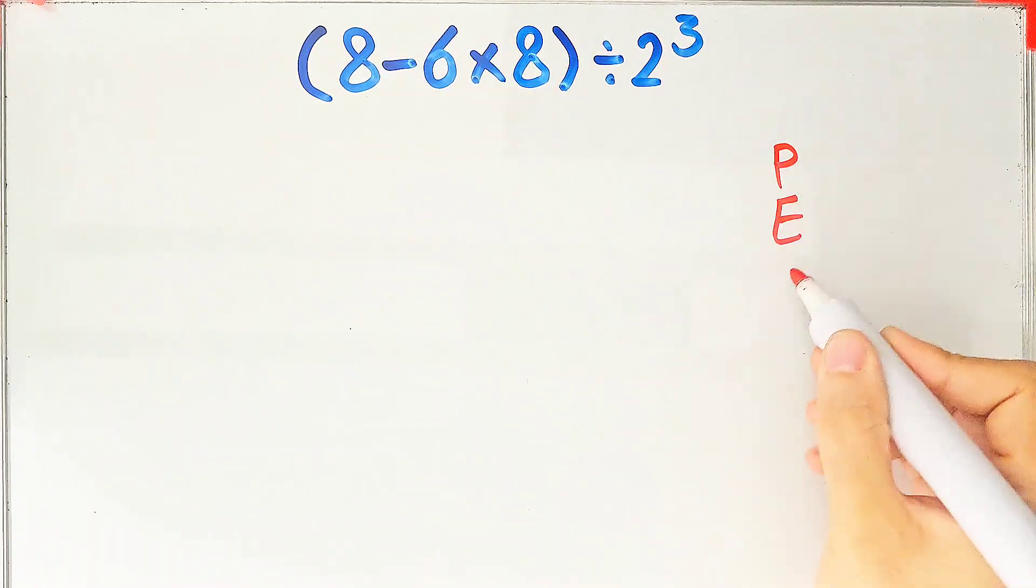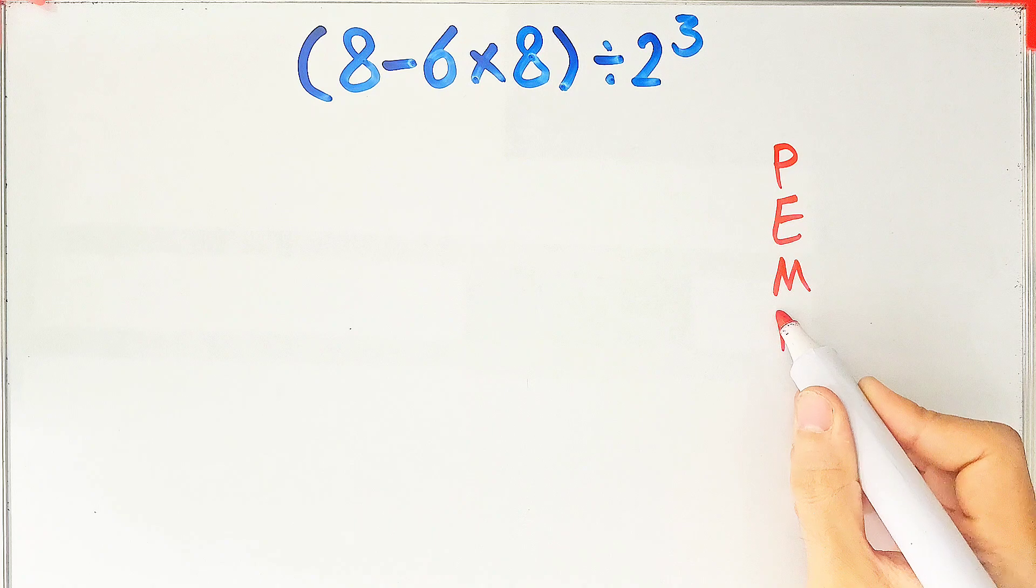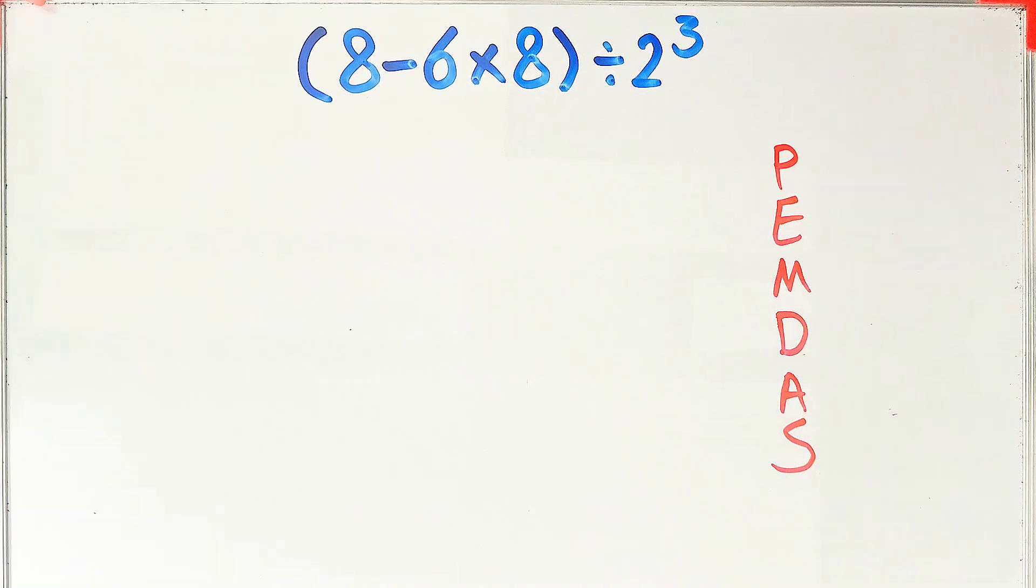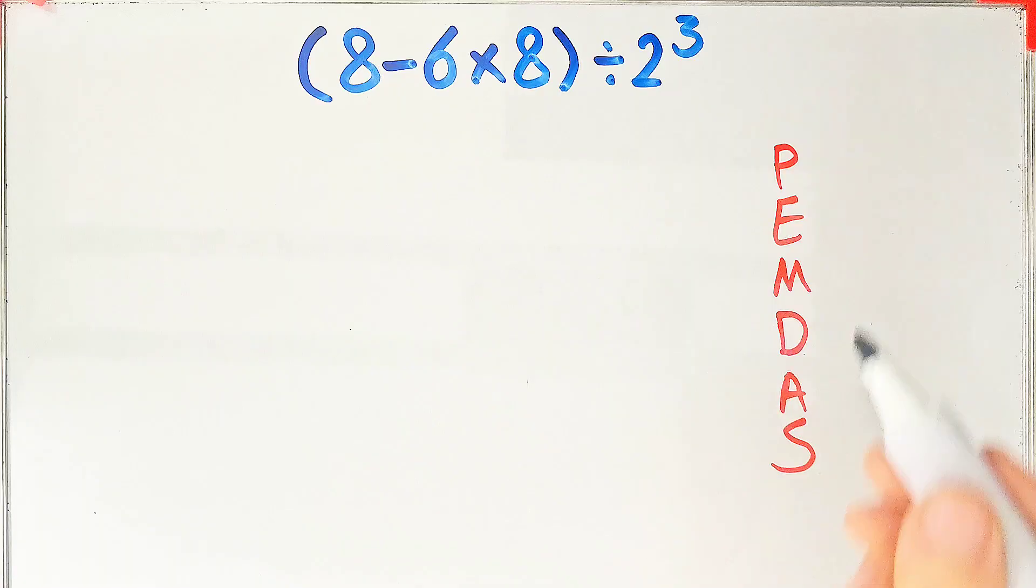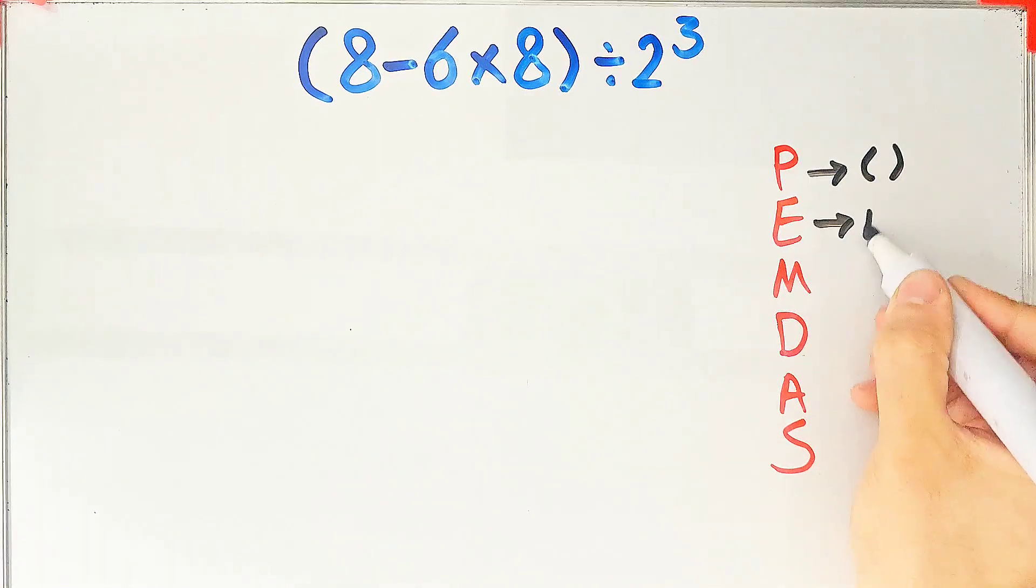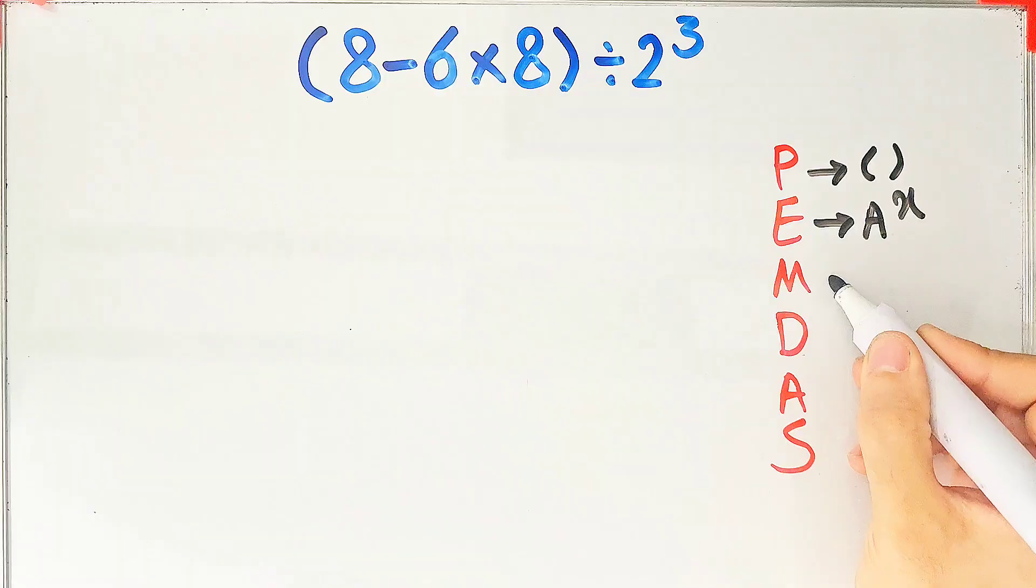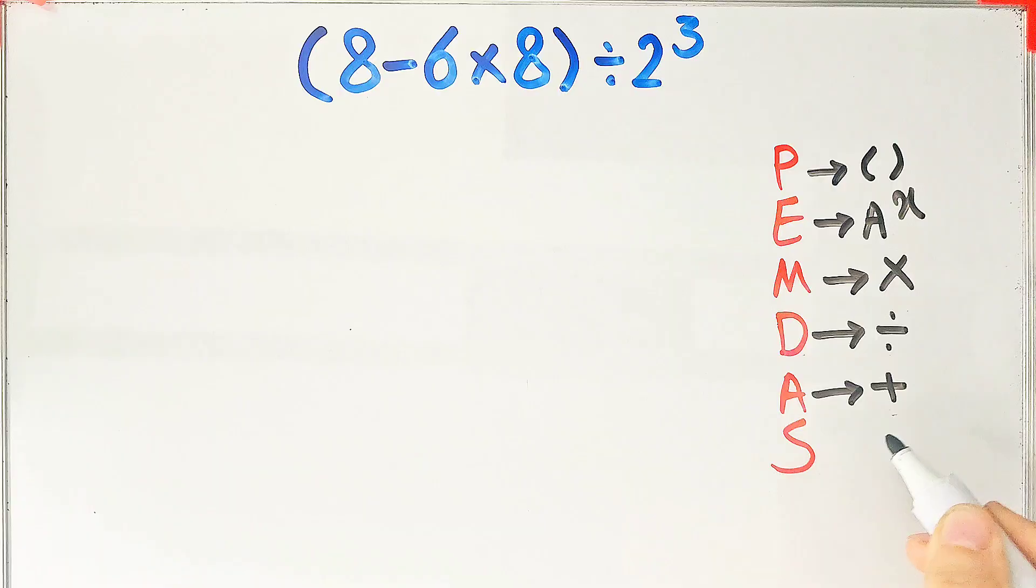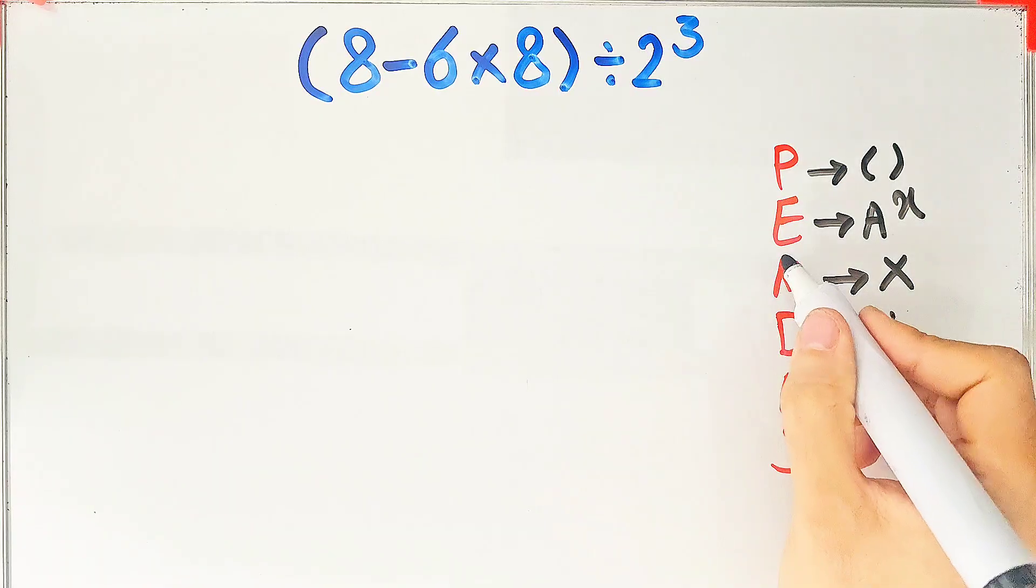PEMDAS shows the priority of the mathematical operations. And if you don't pay attention to this rule, you get the wrong answer. In this rule, P stands for parentheses, E stands for exponent, M stands for multiplication, D stands for division, A stands for addition, and S stands for subtraction.